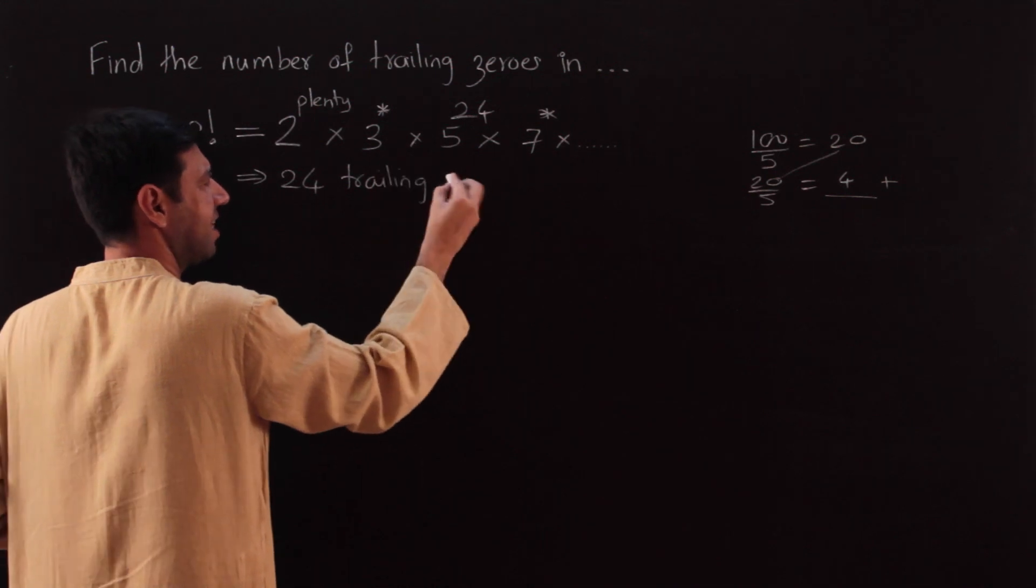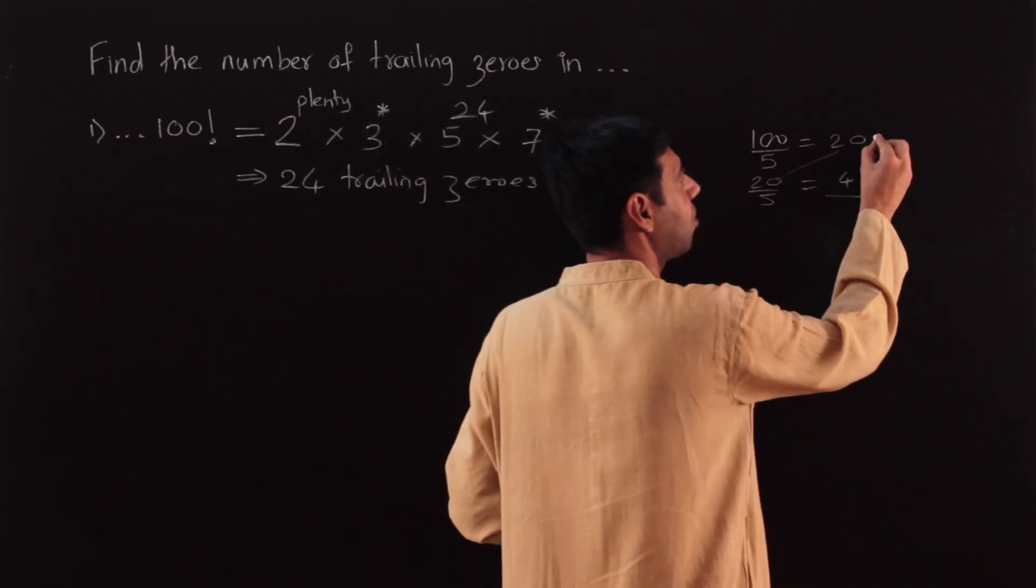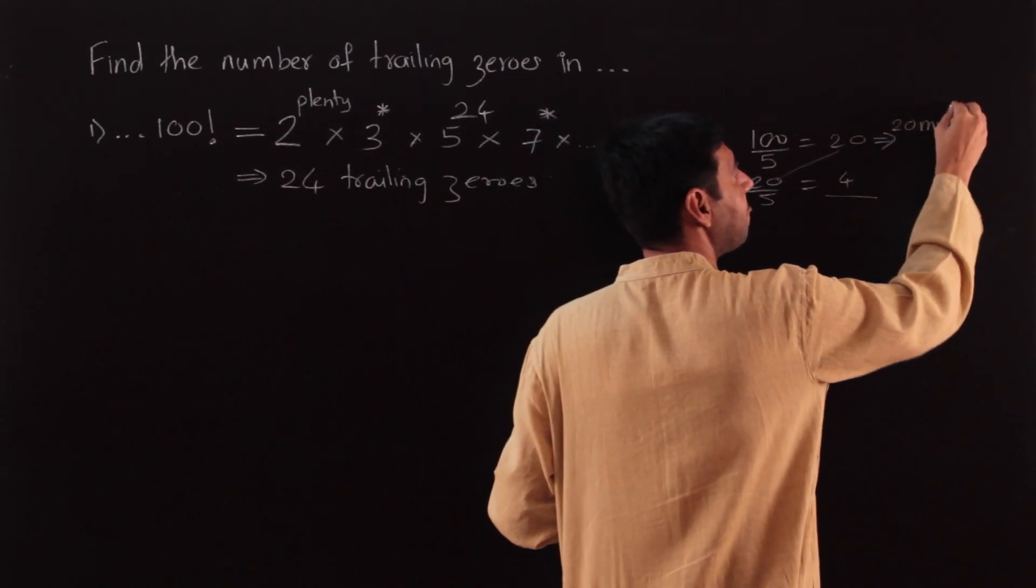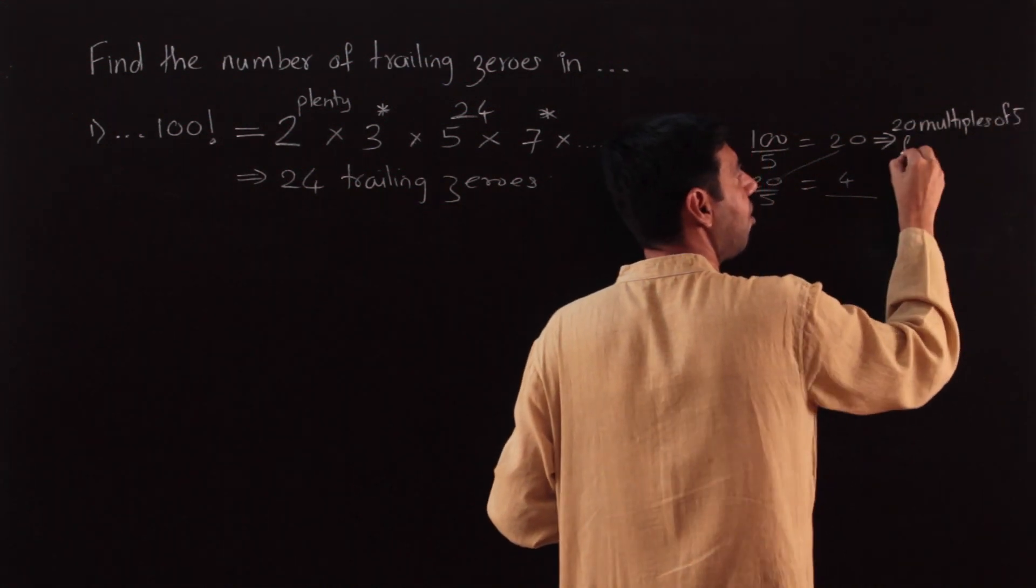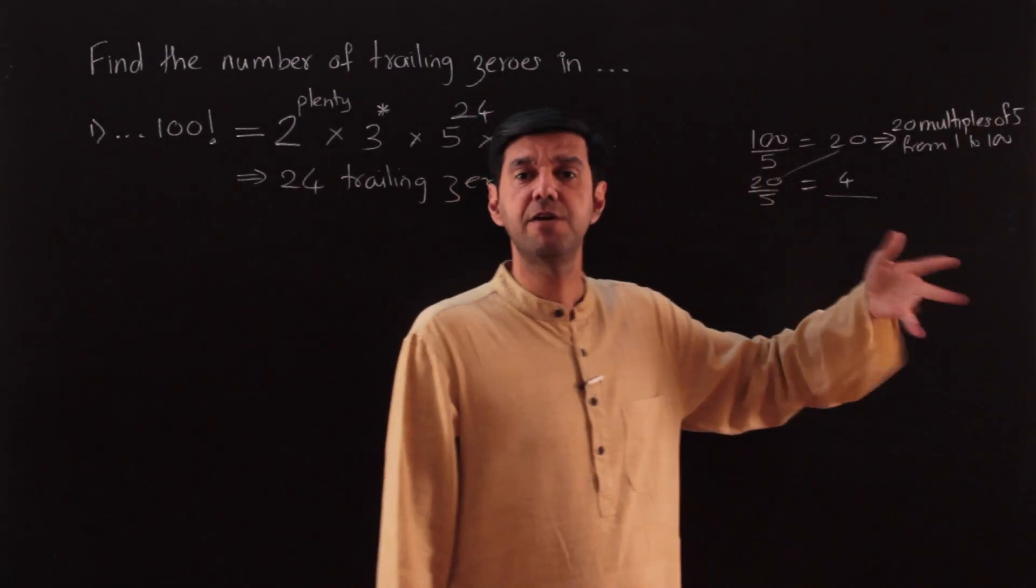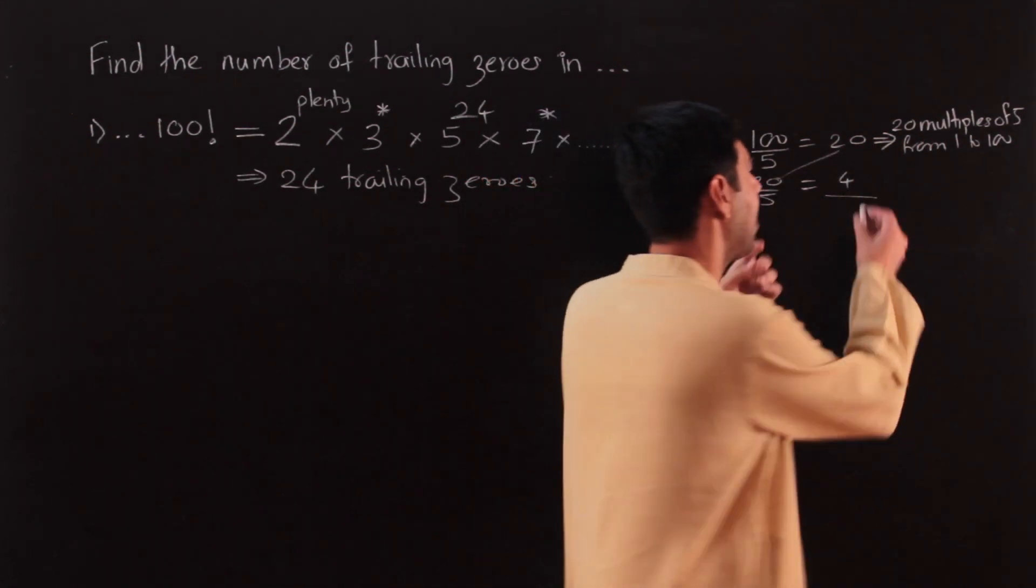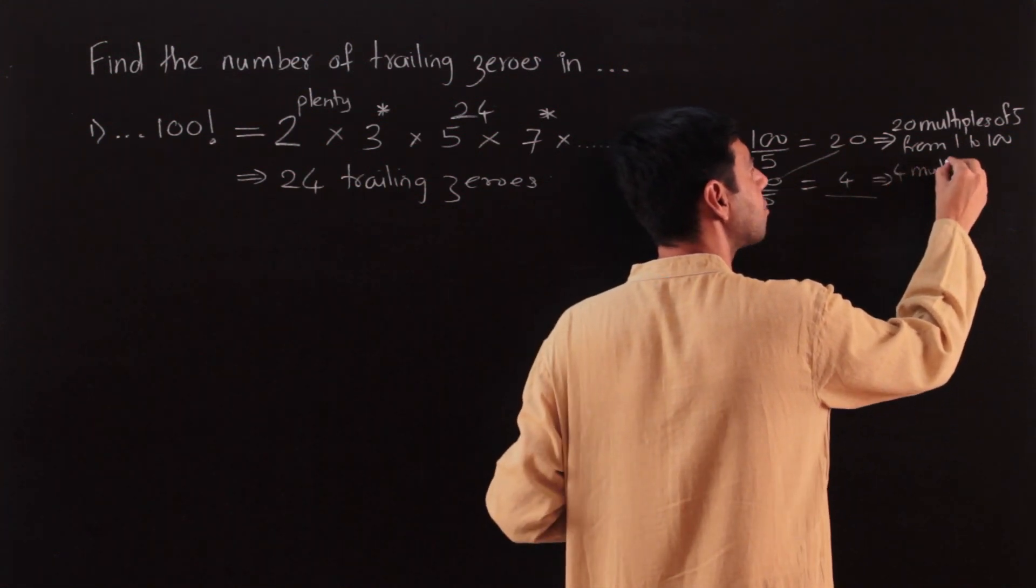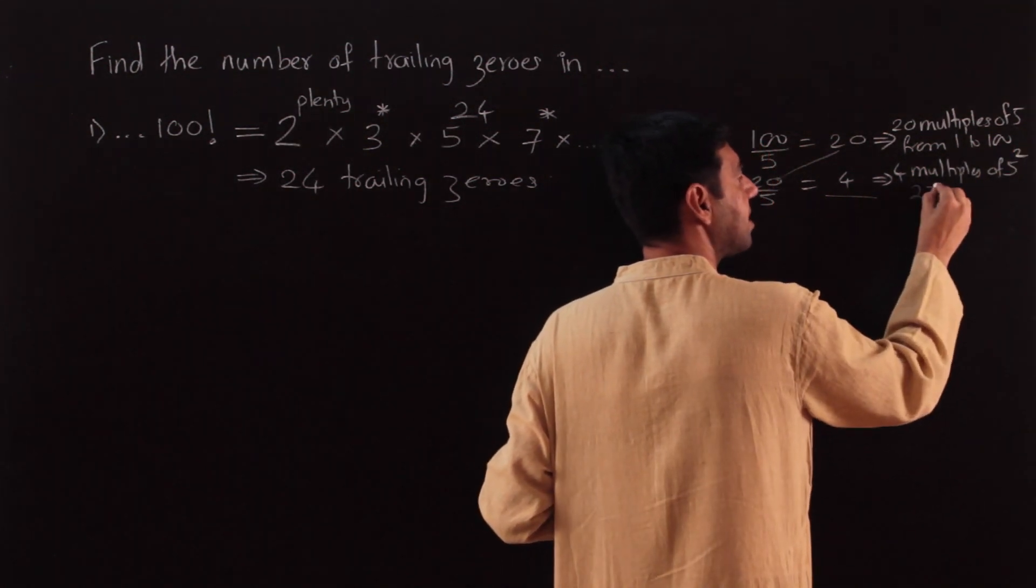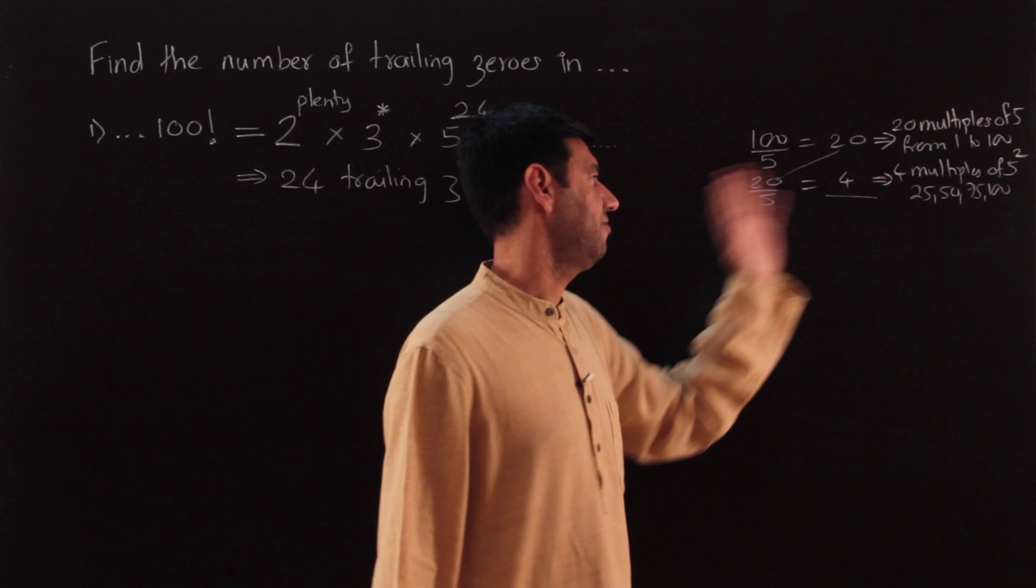It's as easy as this. Being very particular about theory, I would still ask you what are these, what is the meaning of these? These 20 are 20 multiples of 5, multiples of 5 from 1 to 100. I would want those numbers to flash: 5, 10, 15, 20, 25... 90, 95, 100. And what are these 4? These are 4 multiples of 5 square, 4 multiples of 25. Which are those? 25, 50, 75, and 100. Why do I need them? They will give me a second 5.